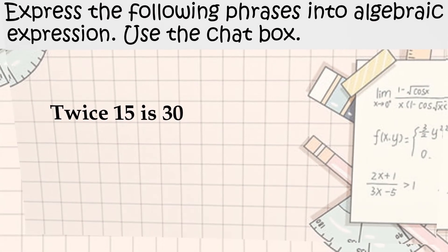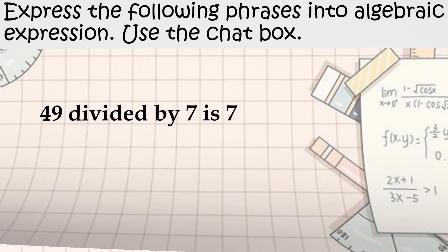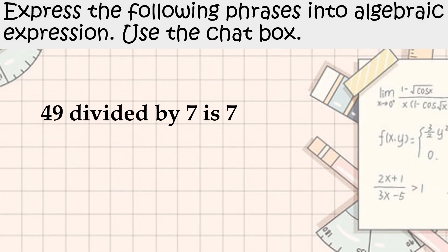Twice 15 is 30. Twice 15, so that is 2 times 15 equals 30. Or you can also write 2 parenthesis 15 equals 30.